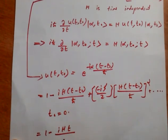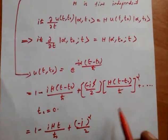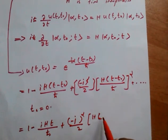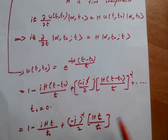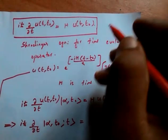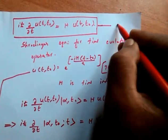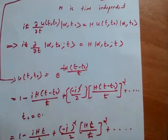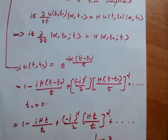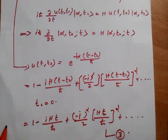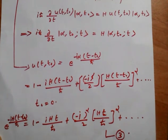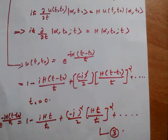Continuing the expansion: exp[−iH(t − t-naught)/h-cross] = 1 minus iHt/h-cross plus (−i)²/2 times (Ht/h-cross)² plus etc. Labeling equations: equation 1, equation 2, and equation 3 — where equation 3 is exp[−iH(t − t-naught)/h-cross] = 1 minus iHt/h-cross plus higher order terms.